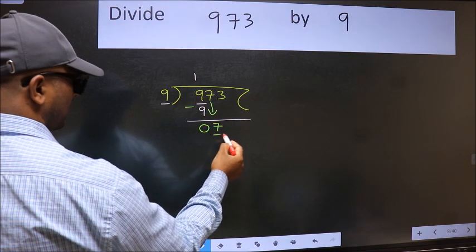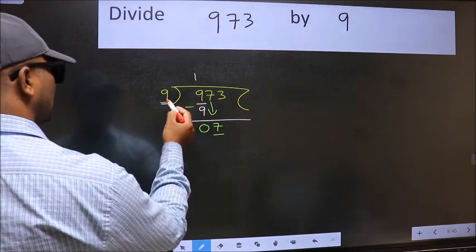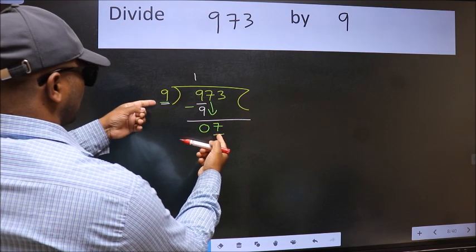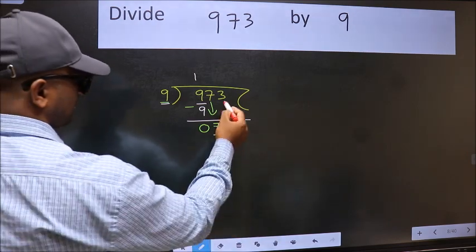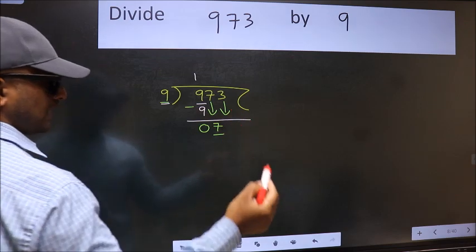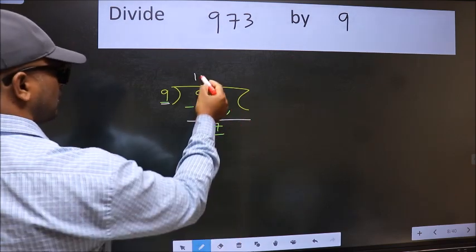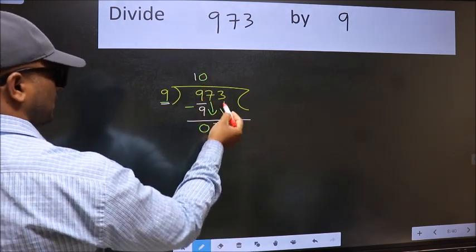Now here we have 7 and here 9. 7 is smaller than 9, so we should bring down the second number. The rule to bring down the second number is we should put 0 here, then only we can bring this number down.